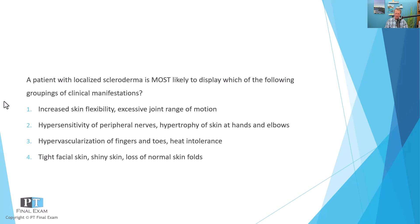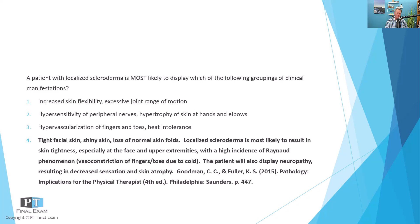Localized scleroderma is characterized primarily by tightness in the skin, and this affects the face and hands primarily. Therefore, the correct answer is number four: tight facial skin, shiny skin, loss of normal skin folds. Scleroderma is essentially a scarring process that occurs in the skin — the epidermis and hypodermis start to scar together. You typically start with some atrophy, then it progresses to hypertrophy, and then back to atrophy again. Significant skin tightness affects the face and hands primarily, which reduces range of motion at those joints.